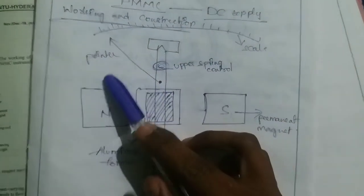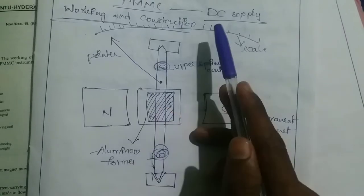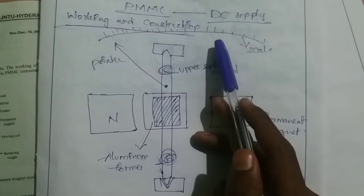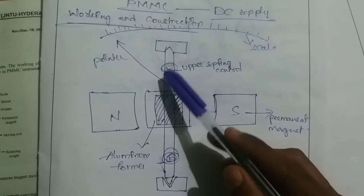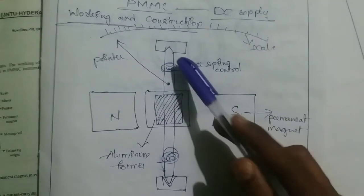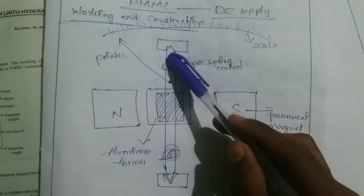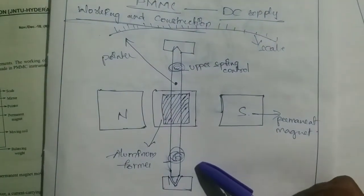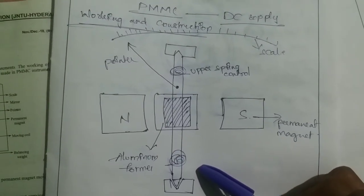The spindle has a pointer and the measuring value is on the scale. The PMMC instrument has a uniform scale. The spindle has two jewel bearings. Next are two springs. These springs provide the controlling torque.